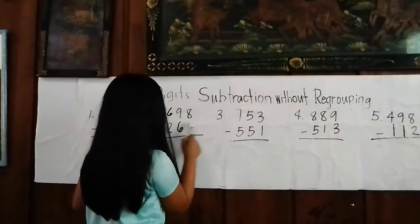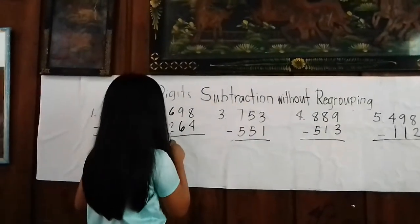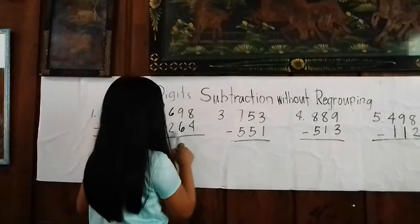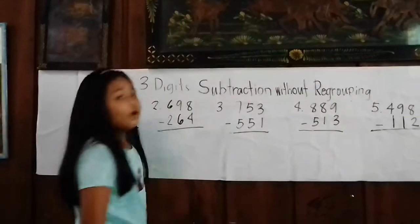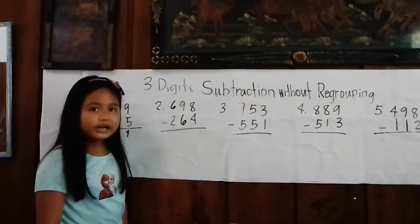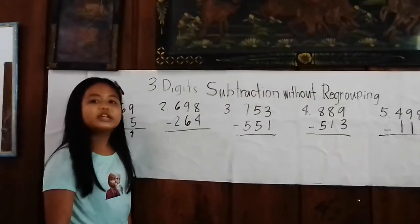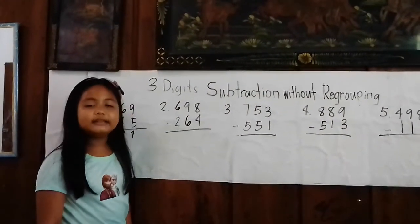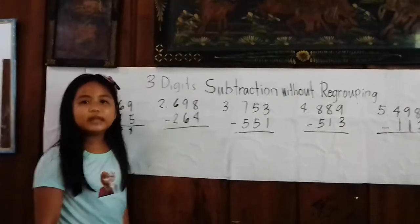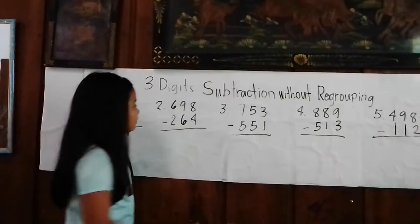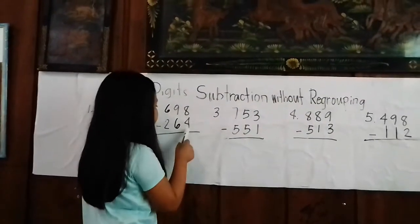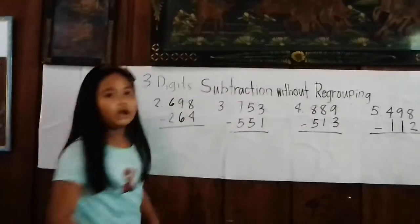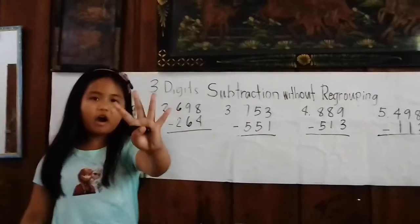Number 2: 698 minus 264. First, we subtract the ones place. 8 minus 4 equals 4.